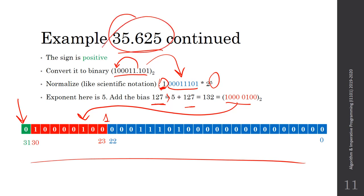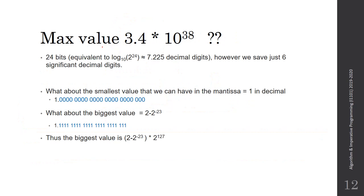Now, since we effectively have 24 mantissa bits, if we calculate the logarithm base 10 of all the possibilities we get approximately 7.25 decimal digits of precision. However, in float we use only 6 significant decimal digits, because some numbers cannot be represented fully due to rounding.